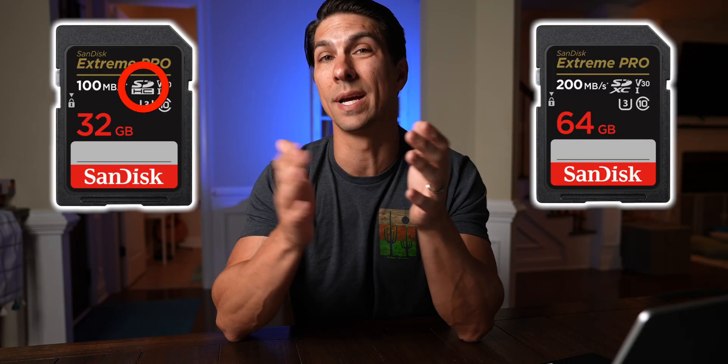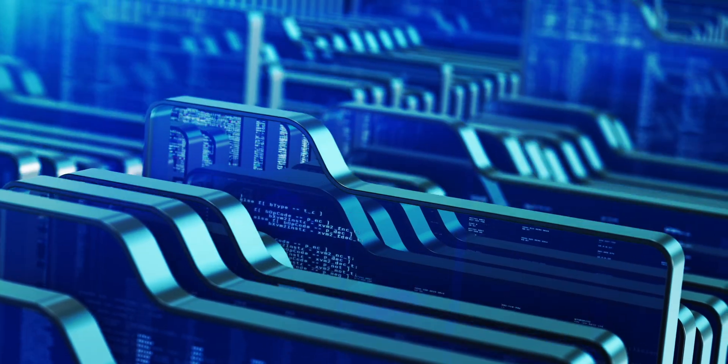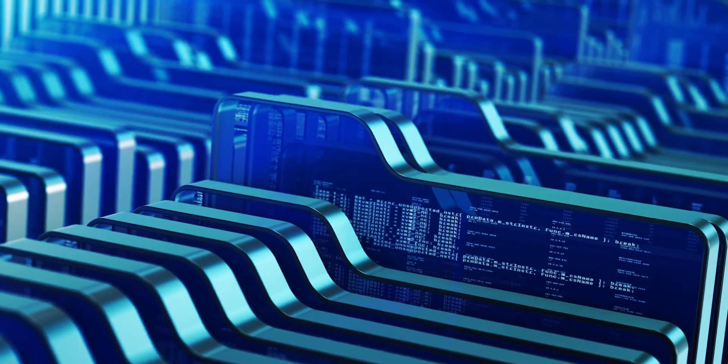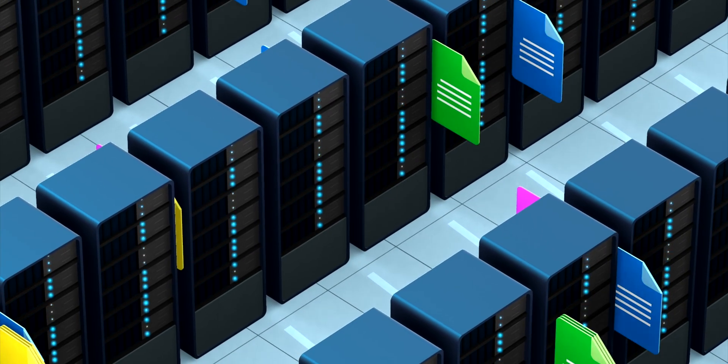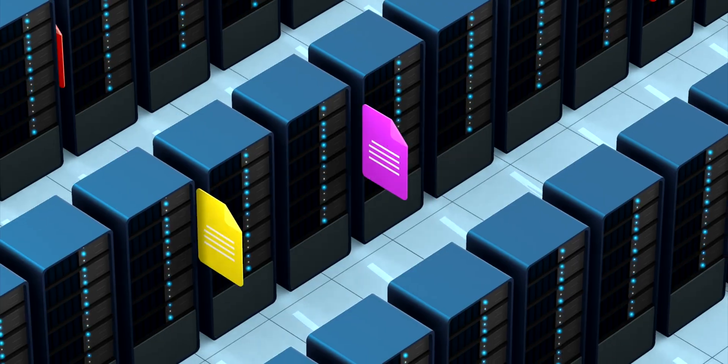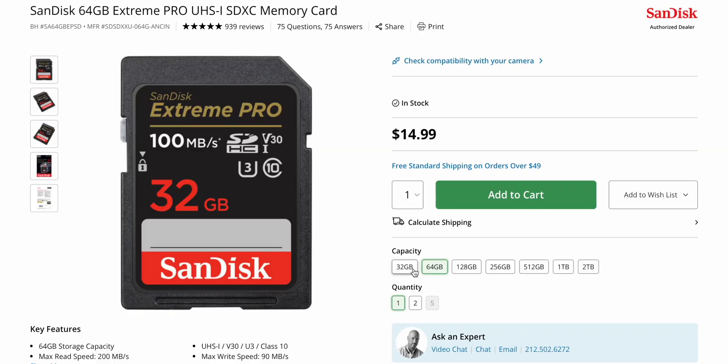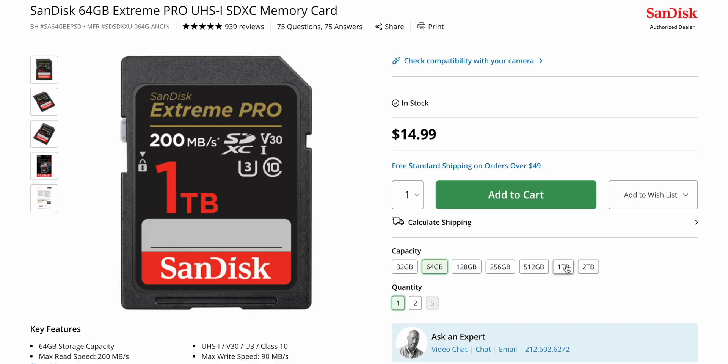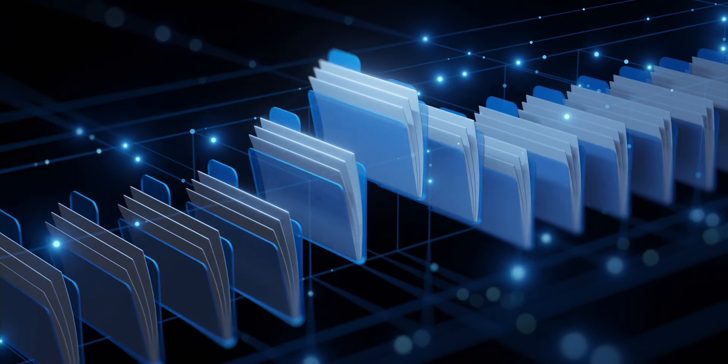The first thing to pay attention to is whether the card says SDHC or SDXC. What's different between these is the type of filing system, which affects the size capacity of the card. SDHC cards max out at 32 gigabytes of storage, and anything over that will be an SDXC card, for which you can find up to two terabytes. Something to be aware of with SDHC cards is that the filing system can result in your video files being cut into multiple smaller videos or even stopping the recording automatically once it reaches a certain gigabyte threshold.